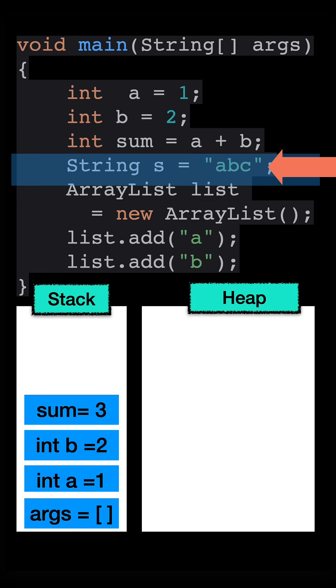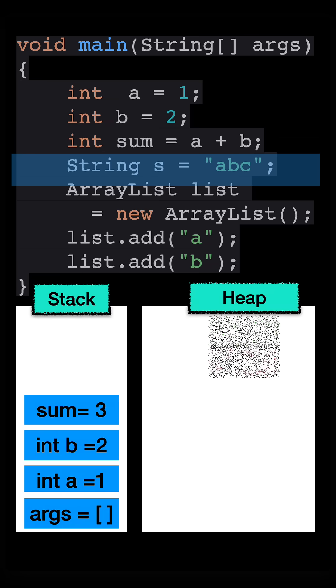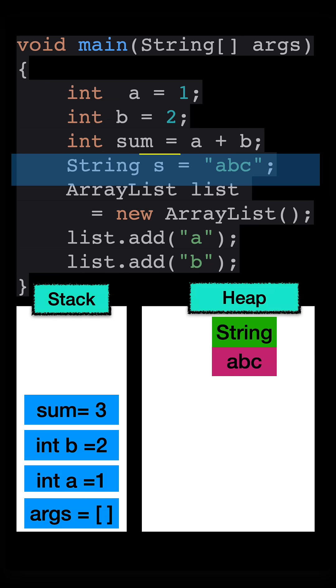Let's invoke the next line. Now string is an object. So this object a, b, c goes into the heap. But as I said, all the references goes into the stack. And here the string reference s goes into the stack. And we have a pointer pointing to the actual string object on the heap.